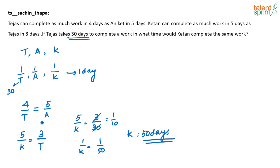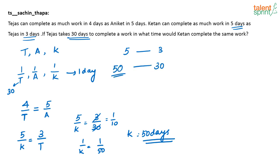Actually, the first statement was not even required. You just needed to compare the work efficiency of Ketan and Tejas. From the second statement alone: Ketan completes as much work in 5 days as Tejas in 3 days. So the work done by Tejas in 30 days will be equal to the work done by Ketan in 50 days. You don't even have to write the equation, but for clarity you can. The answer is 50 days.